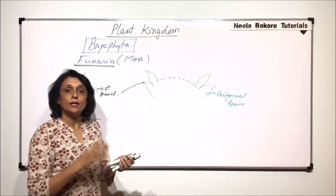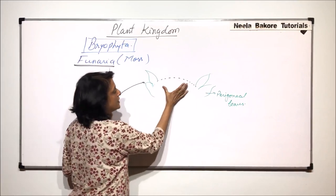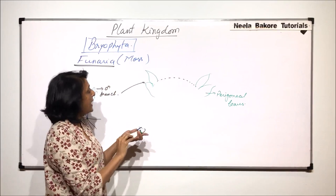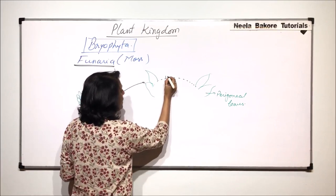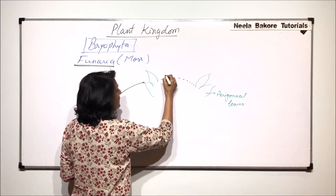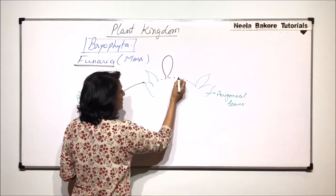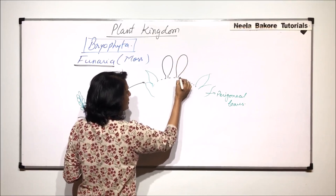They surround it and because of these large leaves, this structure becomes a depressed structure. In this convex part, there are two structures which we find. One is the antheridium and we will enlarge these antheridia to see the detailed structure.